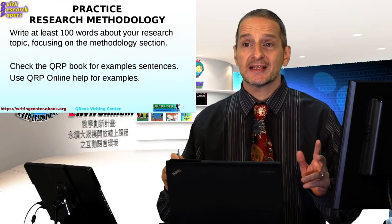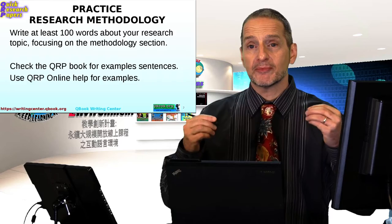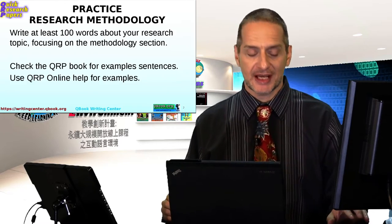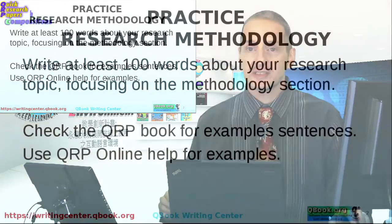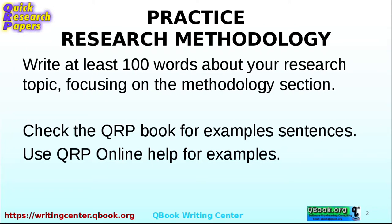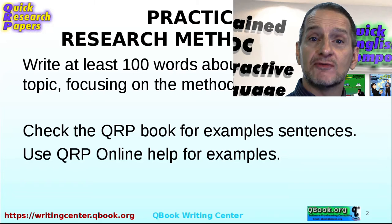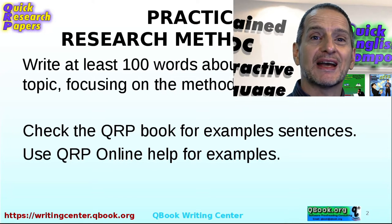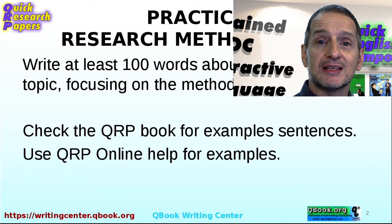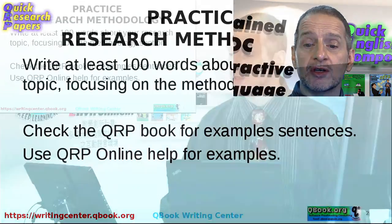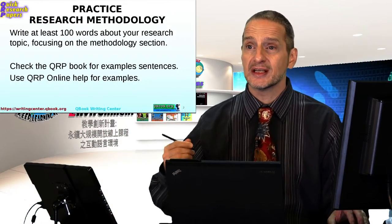Let's go ahead and try a practice now. And this time, let's practice the methodology section. In the methodology section, I'd like you to try just 100 words for now. Give it a try. You can do more, but target at least 100 words. Use the QRP online software. And from there, I'll give you some helpful feedback and help you see your mistakes and how to improve.